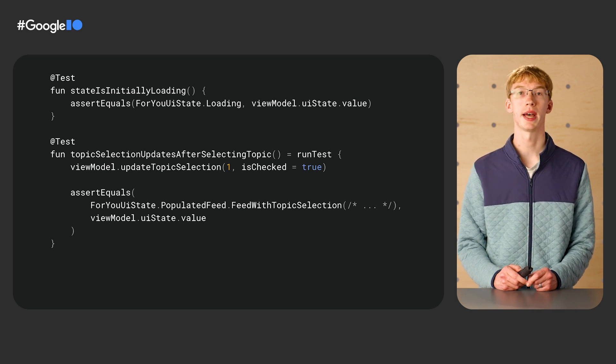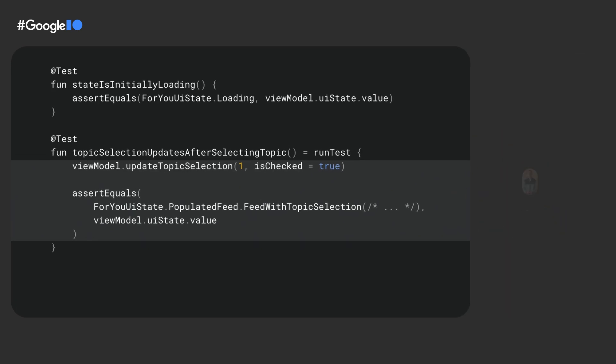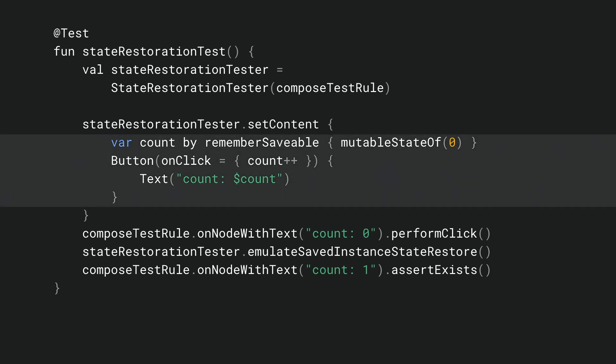In UI tests, one very useful tool for testing configuration changes is the State Restoration Tester. By wrapping a Compose test rule, we can emulate saved instance state saving and restoring. Using this, we can easily check that any state preserved by rememberSaveable is saved and restored properly, just like what happens upon process death or configuration change caused by rotating or folding. Here we have an example test ensuring that a count incremented by a button is saved by instance state. Because the count is remembered by rememberSaveable, the count stays at 1 after we emulate saved instance state restoration.